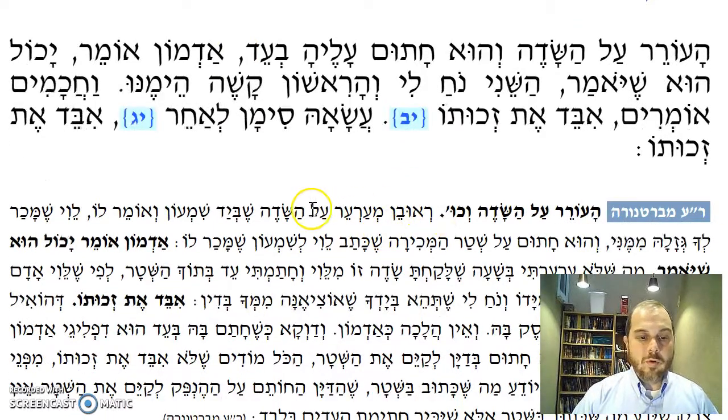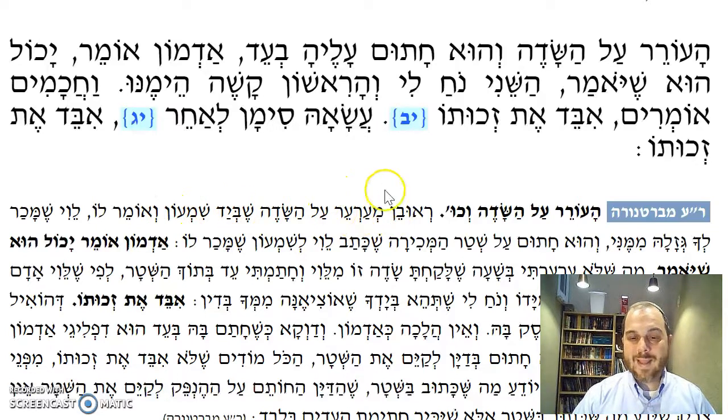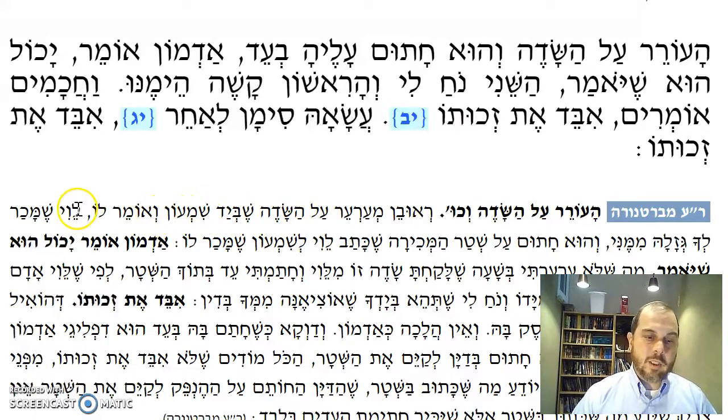The Baraita explains: Reuven is complaining about the field in Shimon's possession. He says to Shimon, listen, Levi who sold you the field stole it from me.